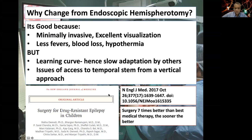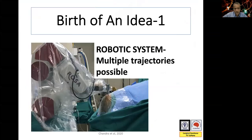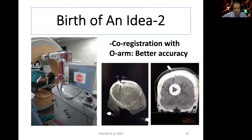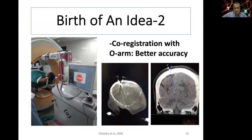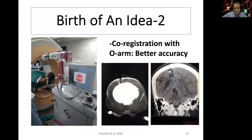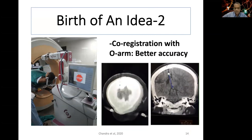Minimally invasive surgery is the way forward for hemispherotomy because it's applied to mostly small children. Our paper in NEJM clearly showed surgical therapy is not only seven times better than medical therapy but the sooner it's done the better — we cannot wait for a child to grow up. The ROCH technique uses a robotic system capable of multiple trajectories, co-registered with the O-arm for very accurate access, though we limit co-registration to one or two trajectories due to radiation exposure.